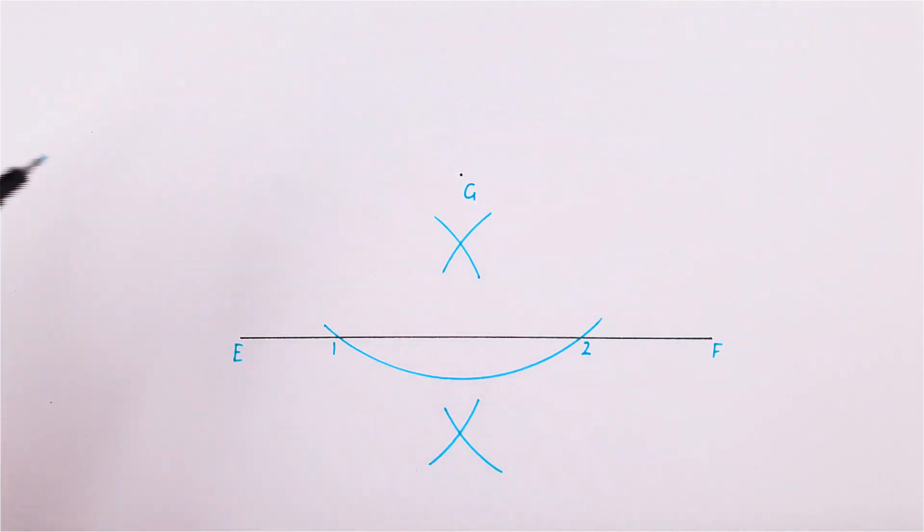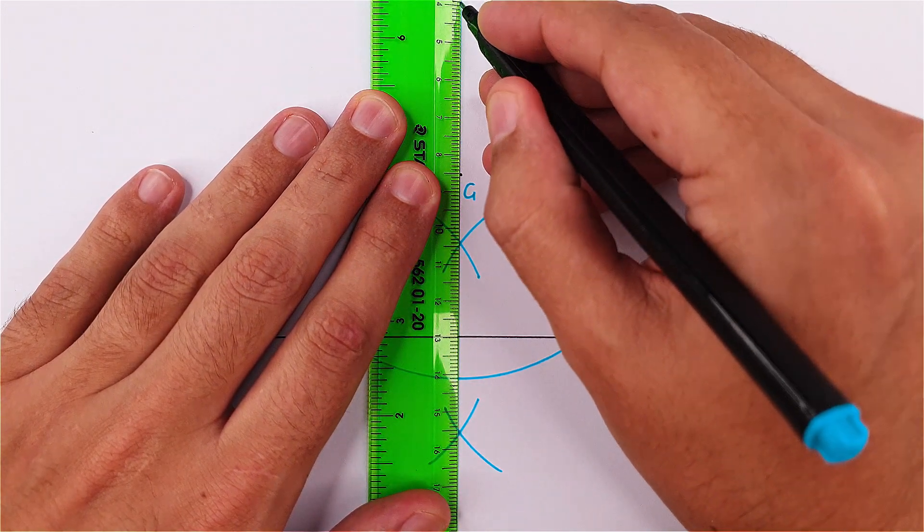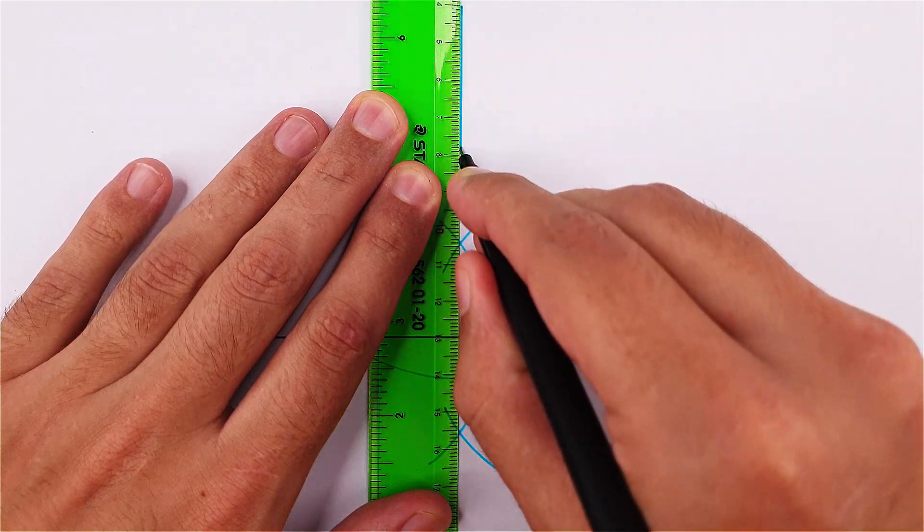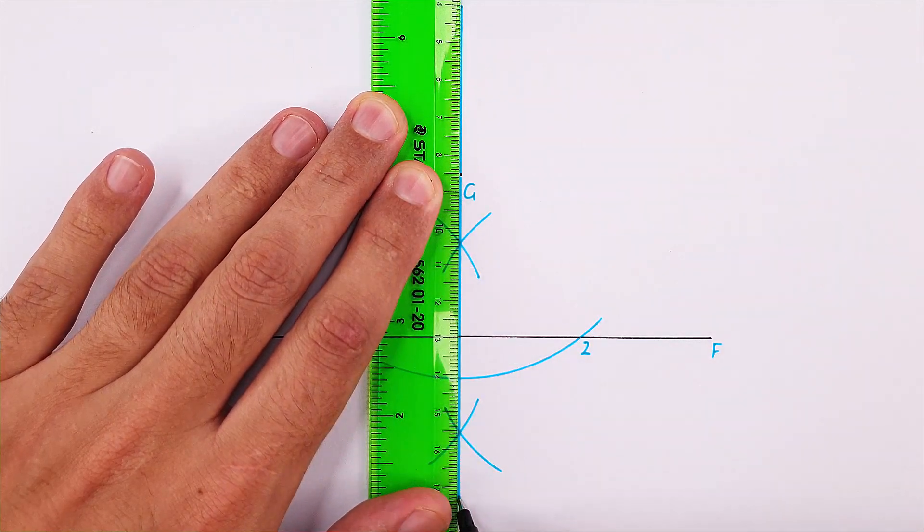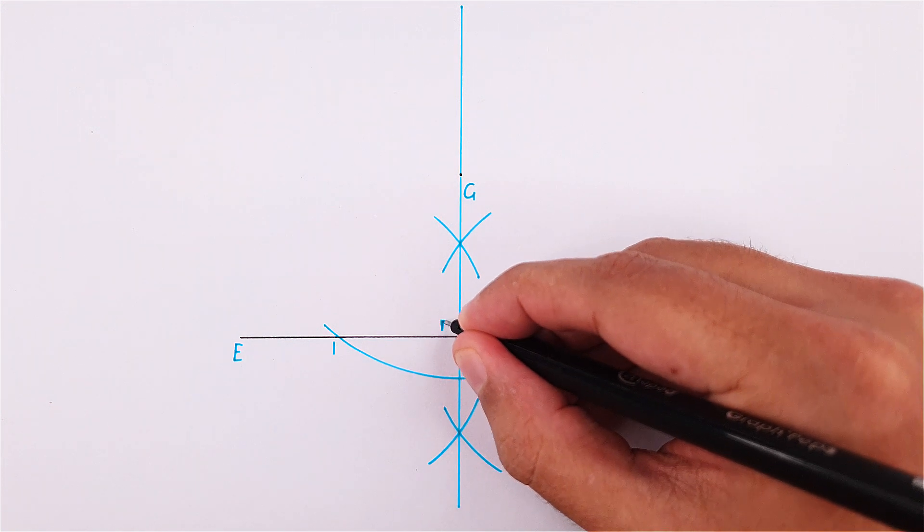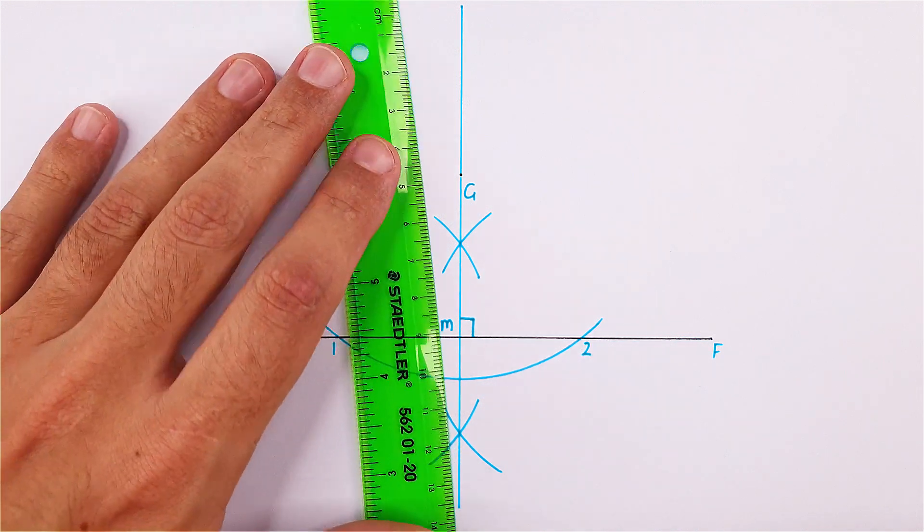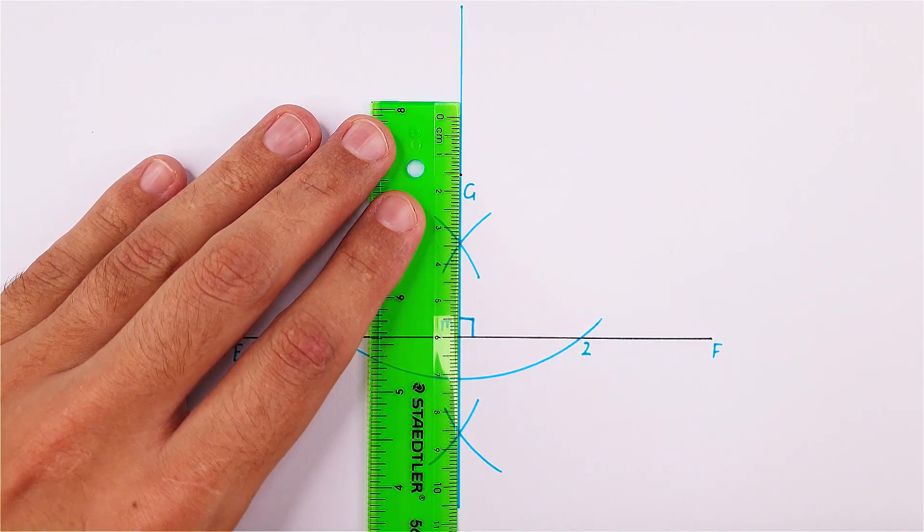You can then draw a line through the intersecting points. Note that this line is perpendicular and the midpoint between points 1 and 2. You can then finish your perpendicular line through point G according to the requirement.